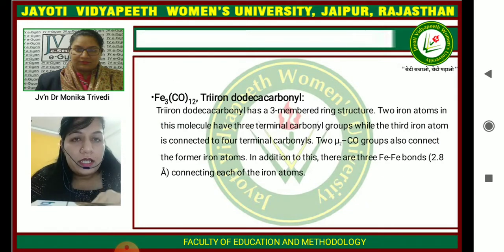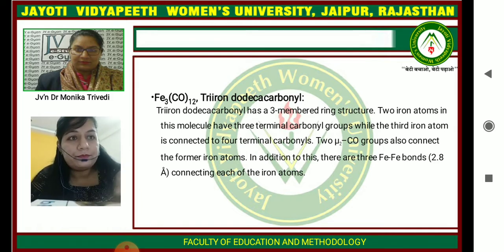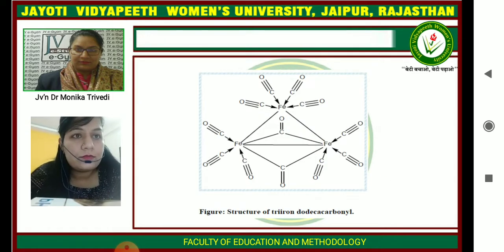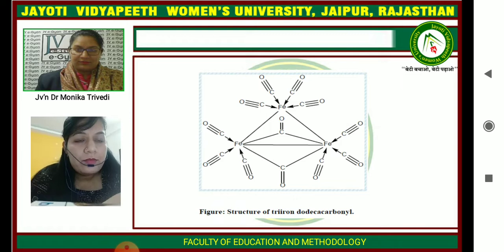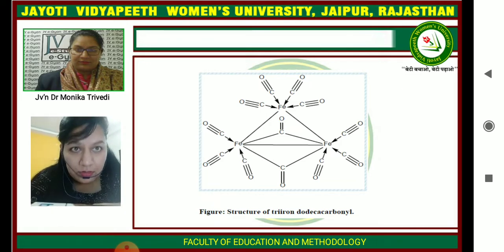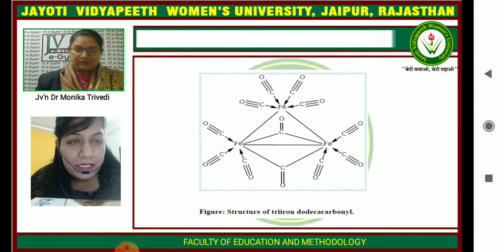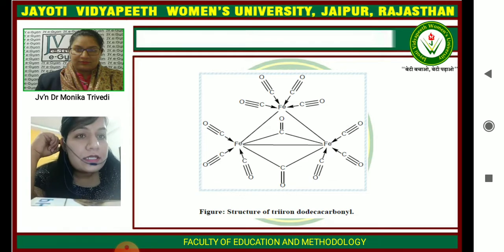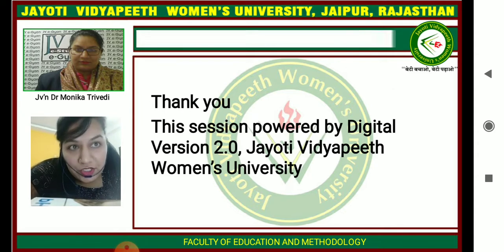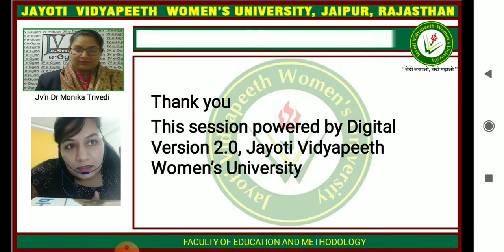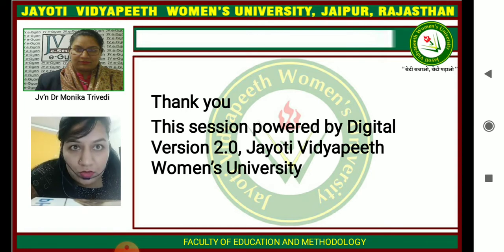Next is Fe3(CO)12. Each metal has three terminal carbonyl ligands and two bridging carbonyl ligands, though one Fe metal has four ligands. Thank you very much. This session is powered by Digital Version 2.0, Jyoti Vidyapeeth Women's University. Hope you liked this lecture. If you have any query, please comment, and thank you very much for watching this video.